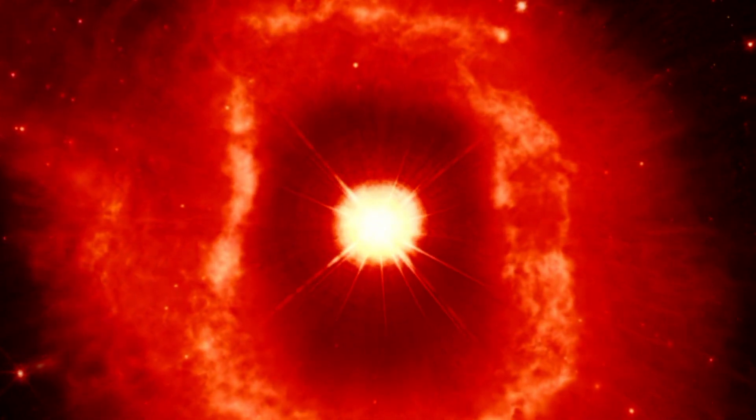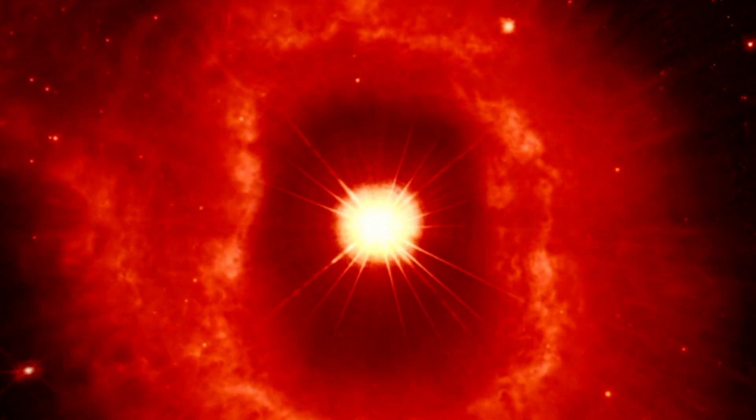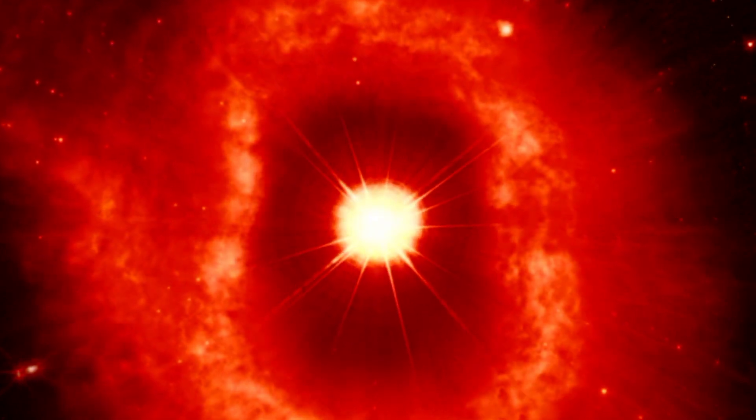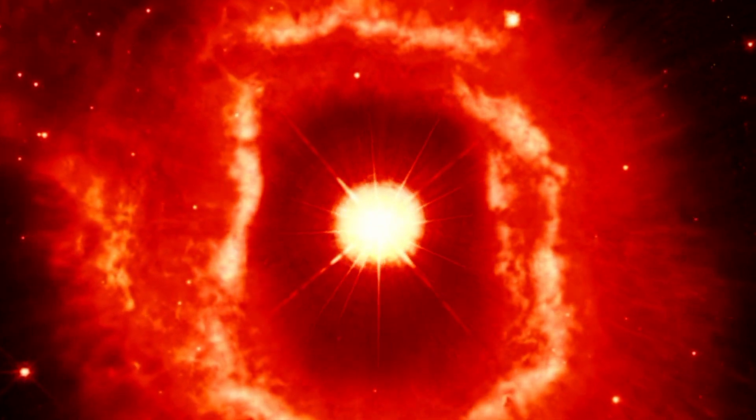This cosmic shroud, a testament to the unstable nature of VY Canis Majoris, also hints at the possibility of hidden companions, planets, or even smaller stars orbiting this cosmic giant.